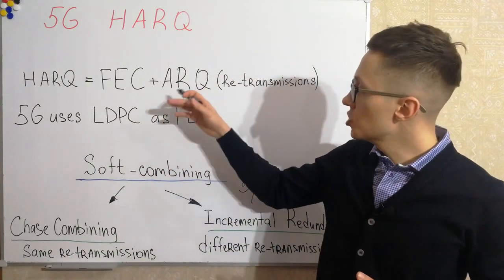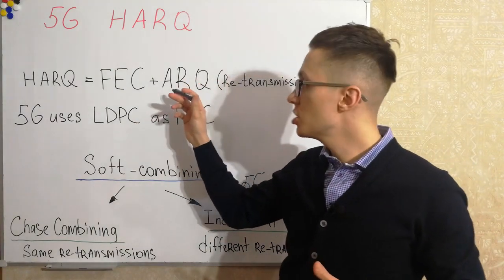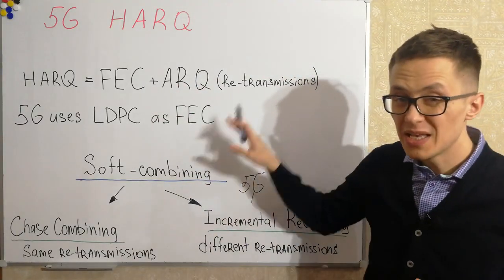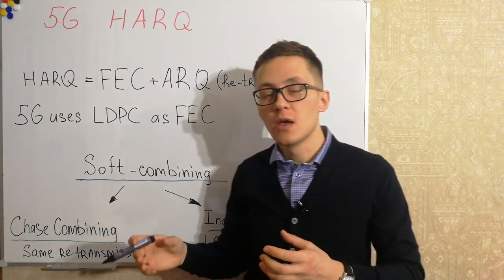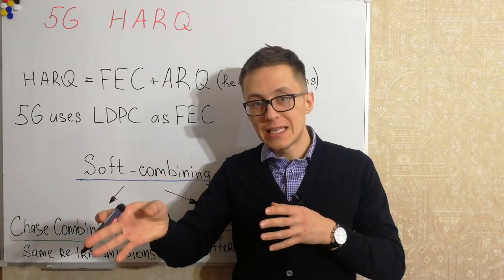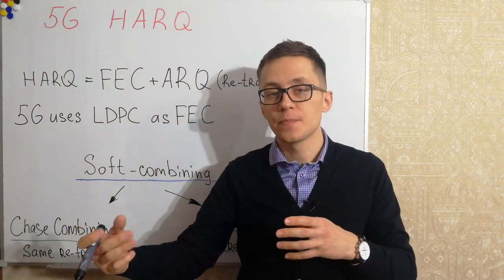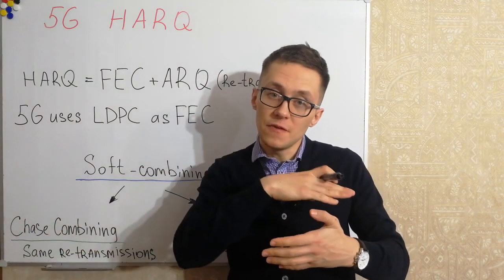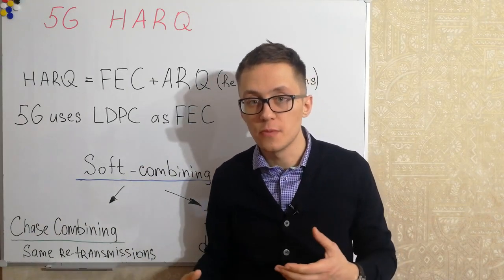In addition to that, the second method can be used. It is automatic repeat requests. Basically we can call it retransmissions. It is when transceiver sent signal and receiver can check and send feedbacks to transceiver with acknowledge or not acknowledge information.